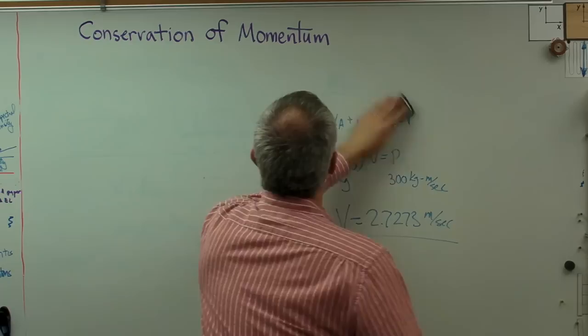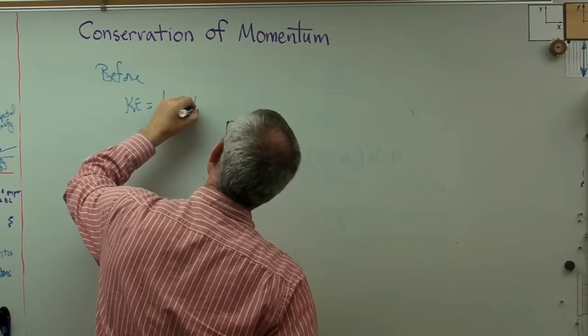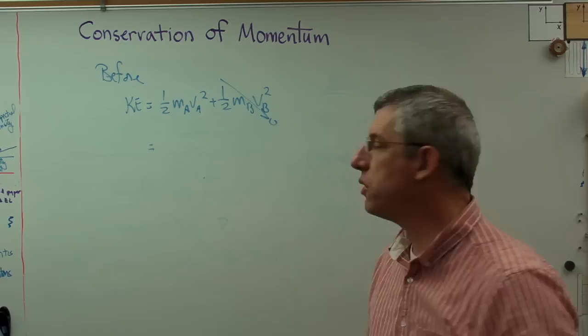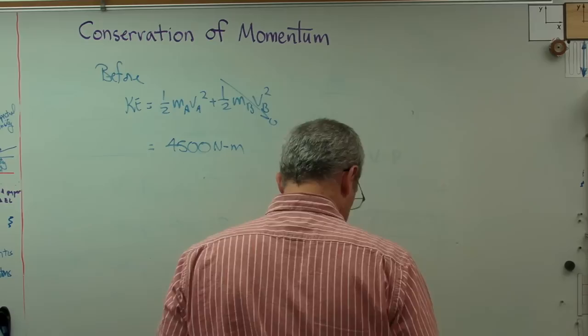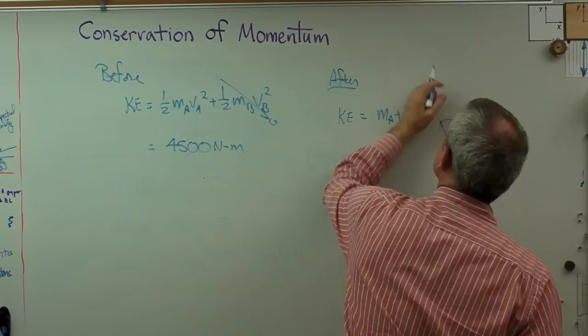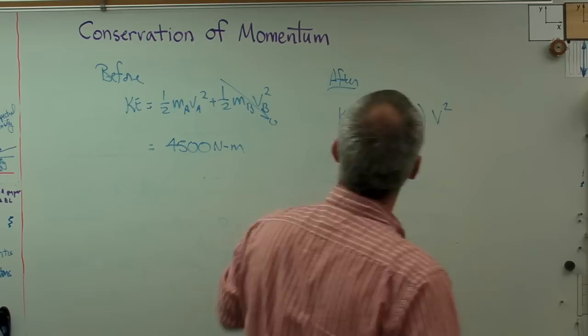Before impact, kinetic energy is one half MA VA squared plus one half MB VB squared, and that's zero. I'm in a bit of a hurry here, I'm trying to keep this video short. If you work this out, you're going to get 4500 Newton meters.